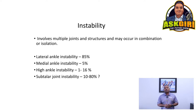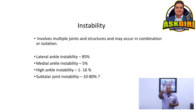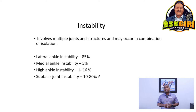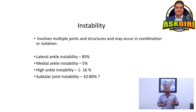About 85 percent of people can get lateral ankle instability. Medial ankle instability is only about five percent — that's the deltoid ligament on the inside, which is stronger and more unusual to injure. High ankle instability occurs higher in the syndesmosis area. Subtalar joint instability is also important for ankle and foot biomechanics.